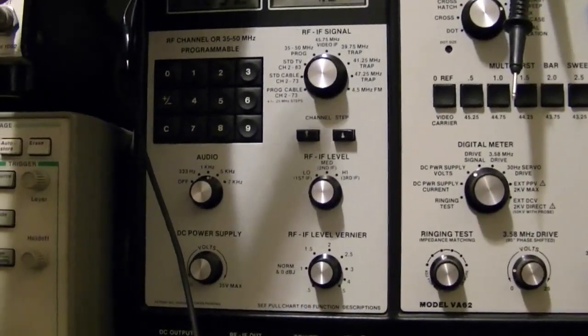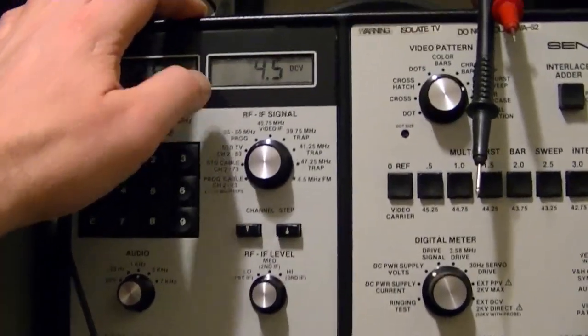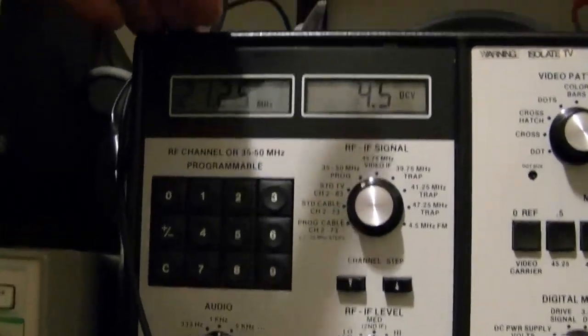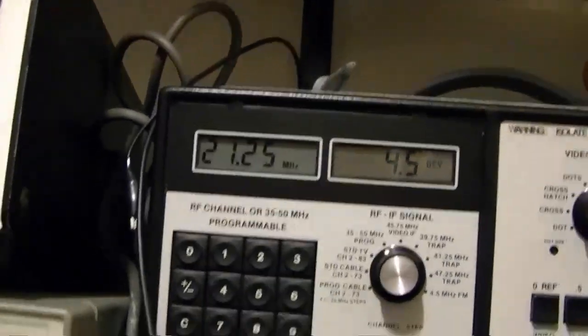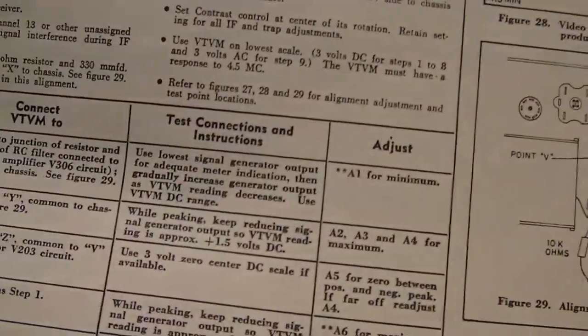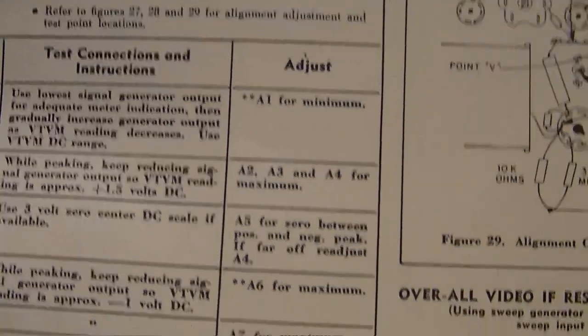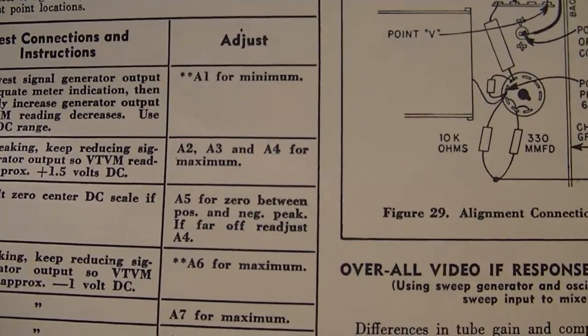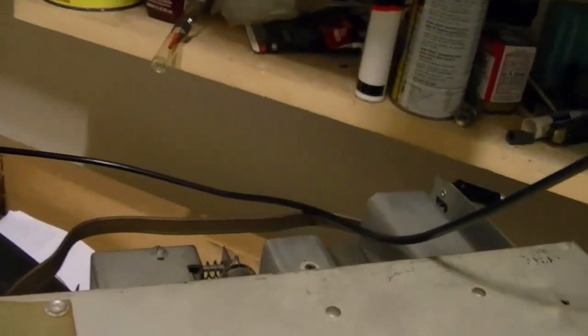I am using the programmable IF. And this unit has been modified so it can go lower than 35 megahertz. This set uses 21.25 for the audio carrier. So that is what I am working on right now. I've already done step one which is the trap. I adjusted for minimum. It was off a little bit. And now I am doing A2, A3, A4 for maximum.